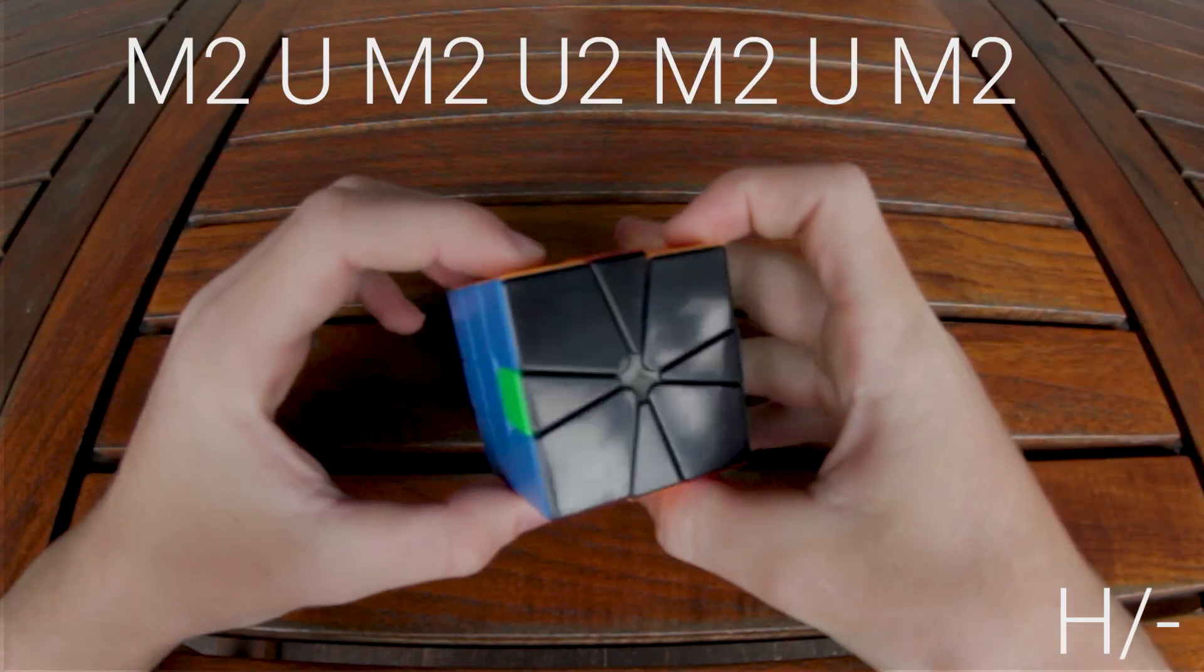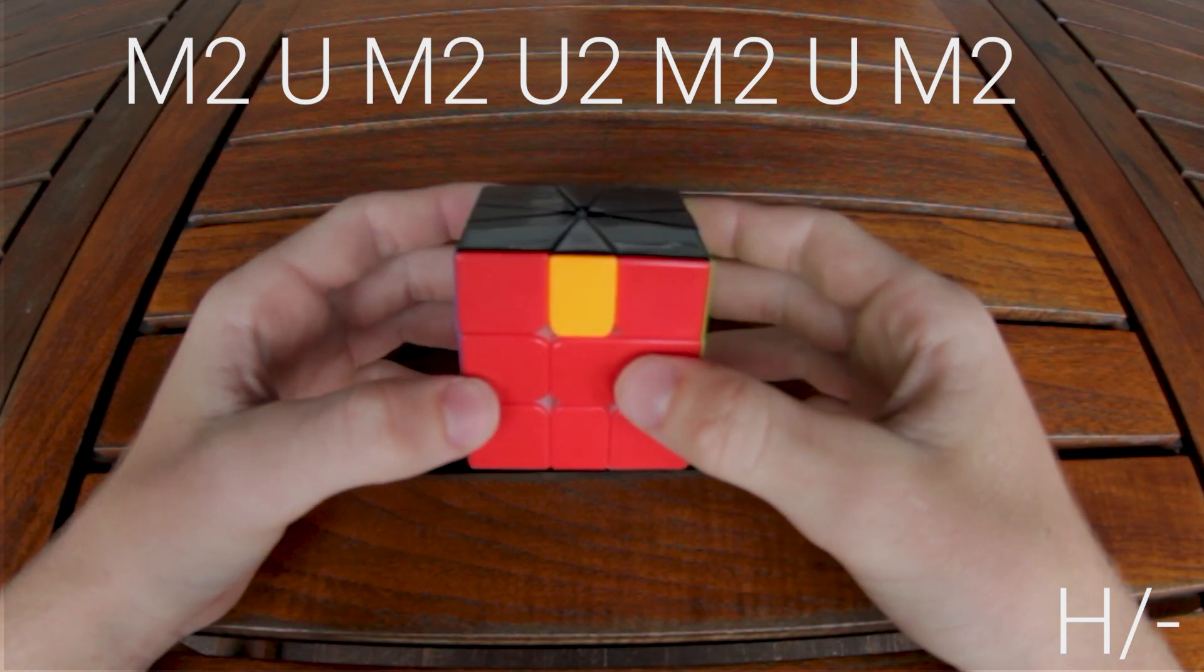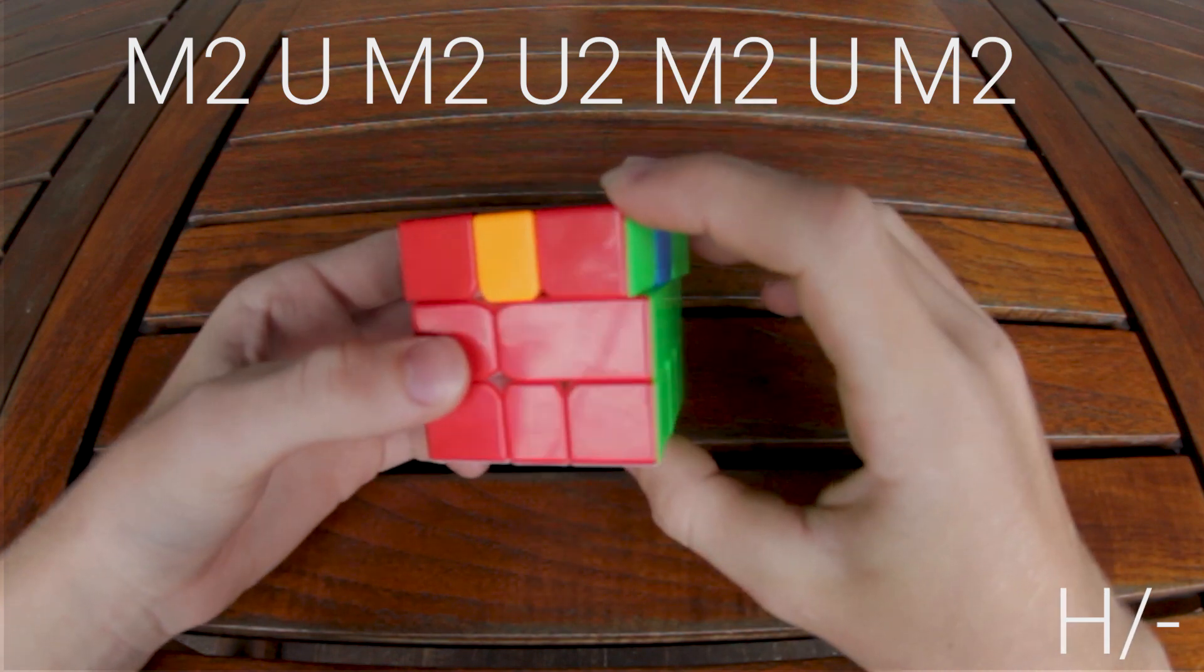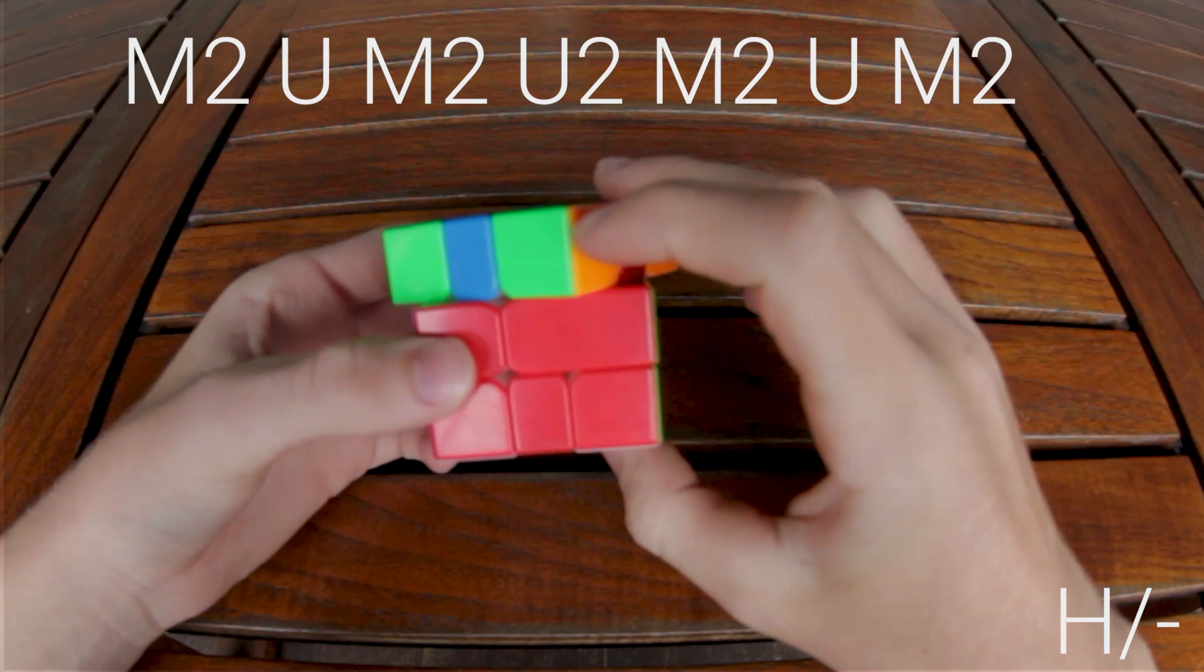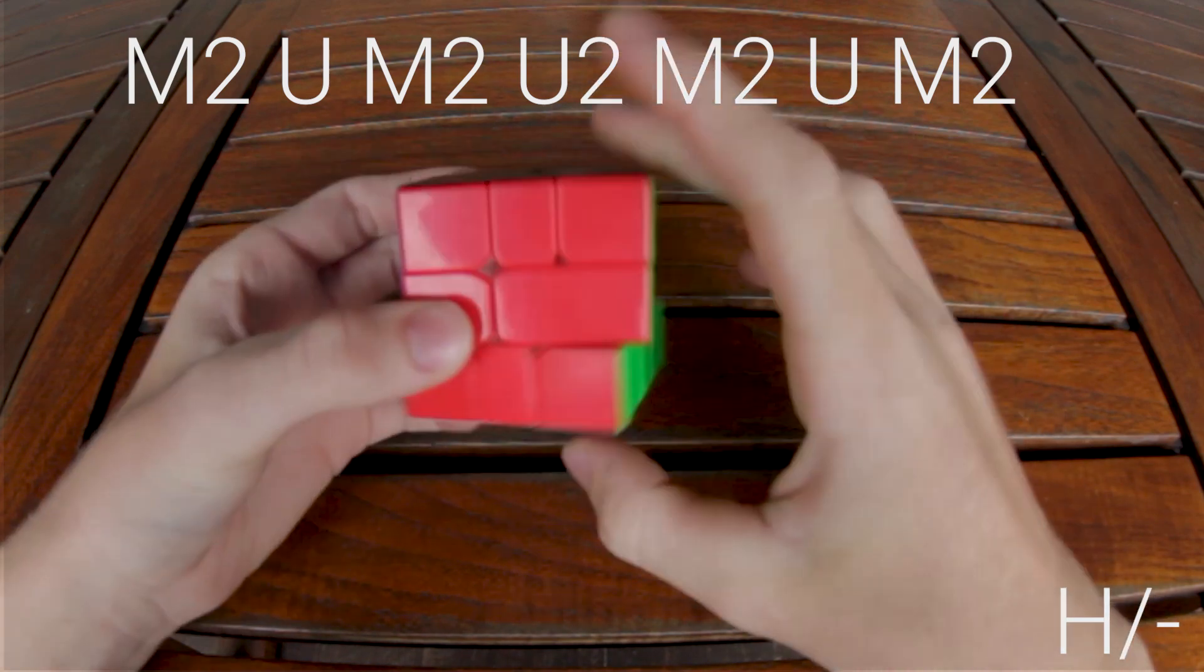The H perm is a great algorithm to start on because it's virtually identical to the main H perm you should know from 3x3. It goes M2, U, M2, U2, M2, U, M2.